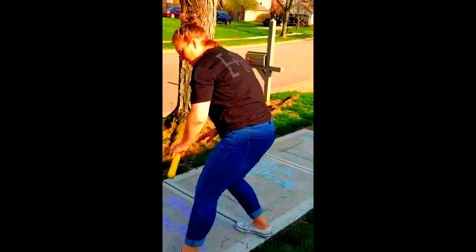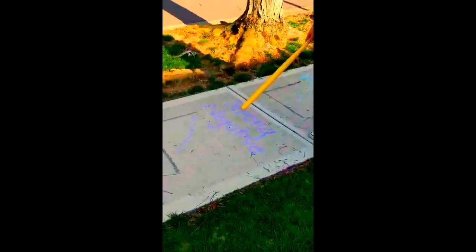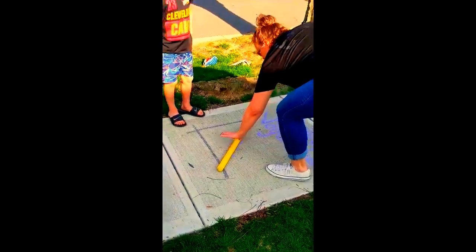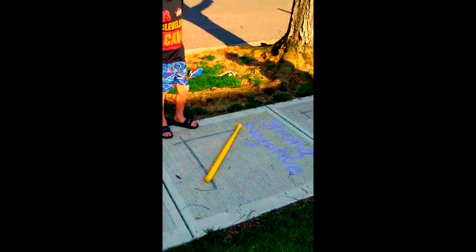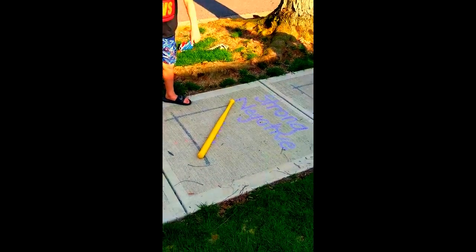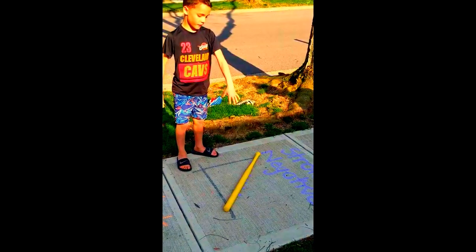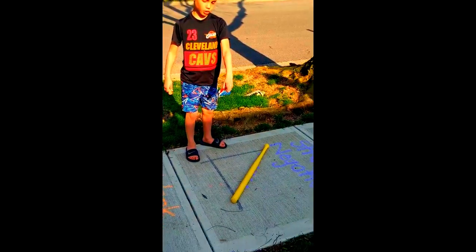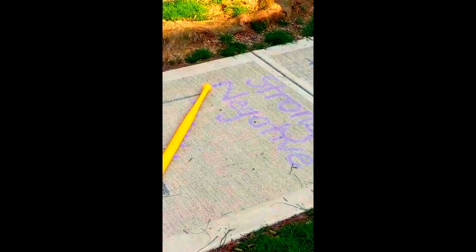All right, here's our next one. So here we have a strong negative. I'm going to put the bat down and I'm going to turn it over to Jack. A strong negative — the lines are going down and they're not all over the place, and the line is closer to the bat.